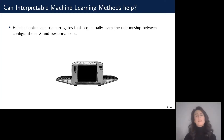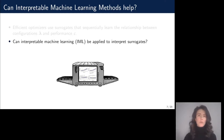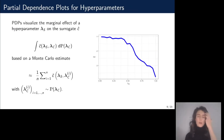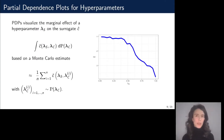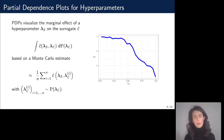Therefore, we ask ourselves whether we can apply methods of interpretable machine learning to interpret the surrogate models within AutoML systems. We focus on one specific method called the partial dependence plot, which is a popular and simple-to-understand method. The partial dependence plot visualizes the marginal effect of a single hyperparameter against the prediction of the surrogate — which predicts model performance — by integrating out all other hyperparameters except for the hyperparameter of interest.